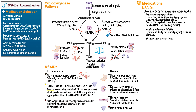Aspirin can cause severe acute reactions. Salicylate overdose can cause metabolic derangement, fever, and hyperventilation, as well as rhabdomyolysis, renal failure, cerebral edema, and seizures. Aspirin can also cause Reye syndrome, a rare, life-threatening disorder that classically occurs in children who take aspirin in the setting of a current or recent viral illness, manifesting with cerebral edema and hepatic failure.